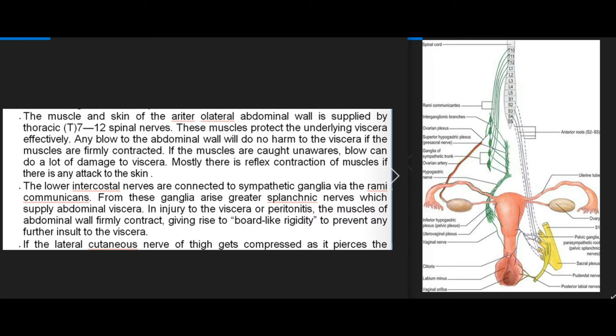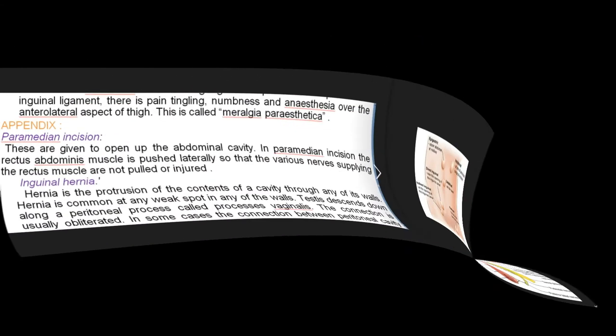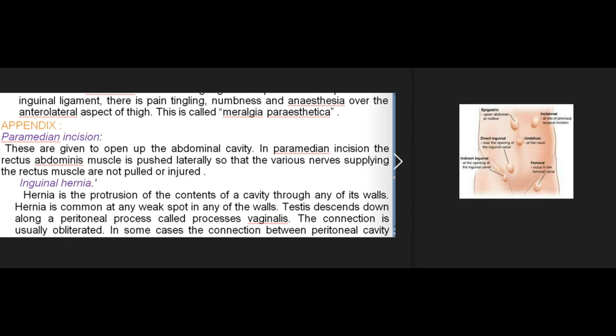If the lateral cutaneous nerve of the thigh gets compressed as it pierces the inguinal ligament, there is pain, tingling, numbness and anaesthesia over the anterolateral aspect of the thigh. This condition is called Meralgia Paraesthetica.